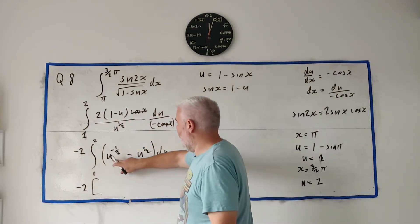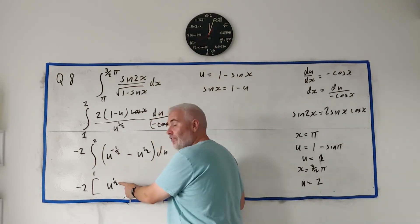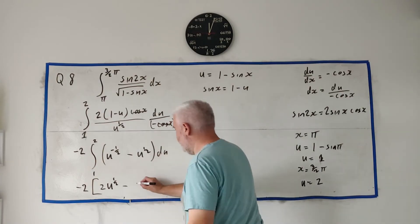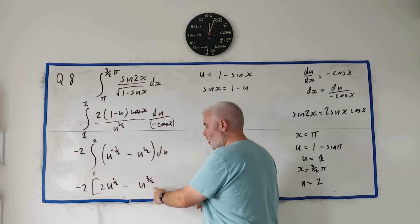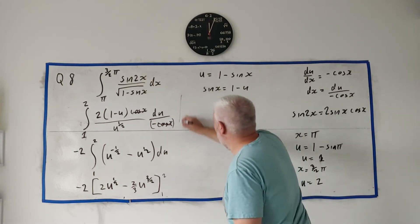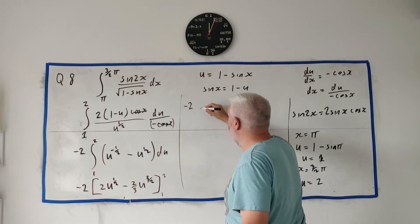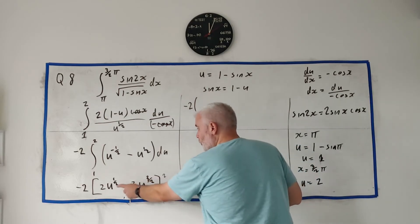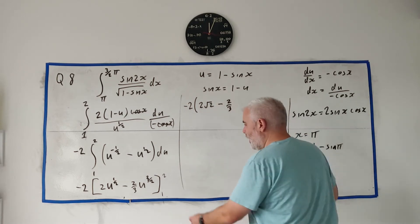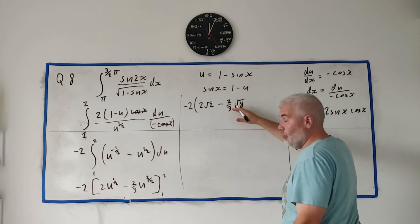So, minus 2 multiplied by — what's the integral of this? We add 1 onto the power, so that becomes u to the power of one half, and then we divide by the new power. Dividing by one half is like multiplying by 2. Minus — we add 1 onto the next term, that's u to the power of 3 over 2, divide by 3 over 2, which is like multiplying by 2 over 3. We evaluate this between 1 and 2. I'll fill in 2 first — that gives 2 root 2, minus 2 over 3 times root 8, which is also 2 root 2.